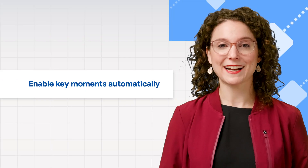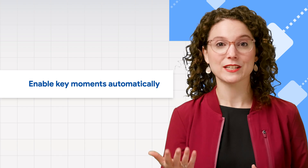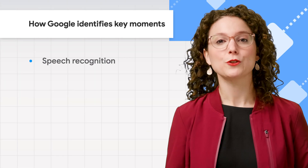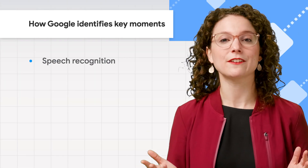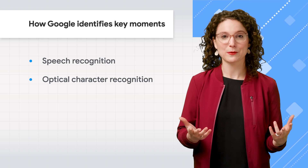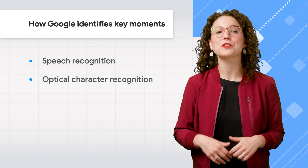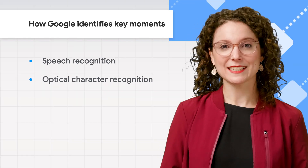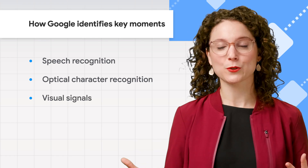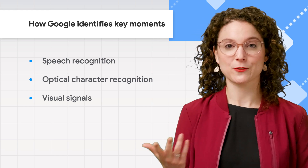First, let's talk about how Google automatically identifies key moments, and how you can enable this for your videos. Google uses several different signals to look for key moments in videos. With speech recognition, Google analyzes the words that are spoken in a video to infer key topics being discussed. With optical character recognition, Google looks for text that's displayed within the video, kind of like this, which might indicate important sections of a video. In limited cases, Google may also use visual signals to understand what's happening in a video, like the moment a goal is scored in a soccer game. We expect to add more use cases for visual signals in the future. These technologies let Google do the work for you and save you time, so you don't have to manually choose the key moments in each of your videos.